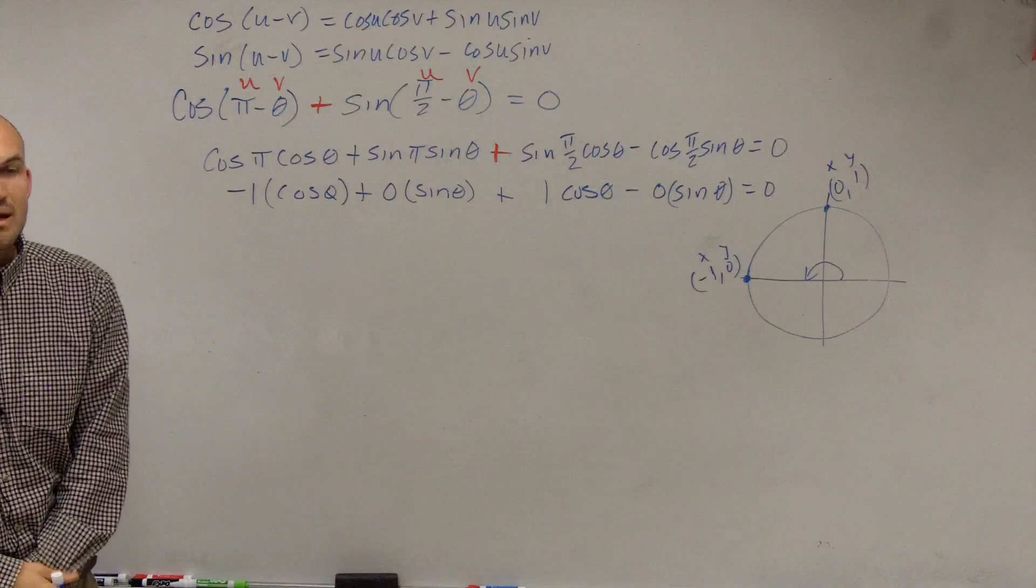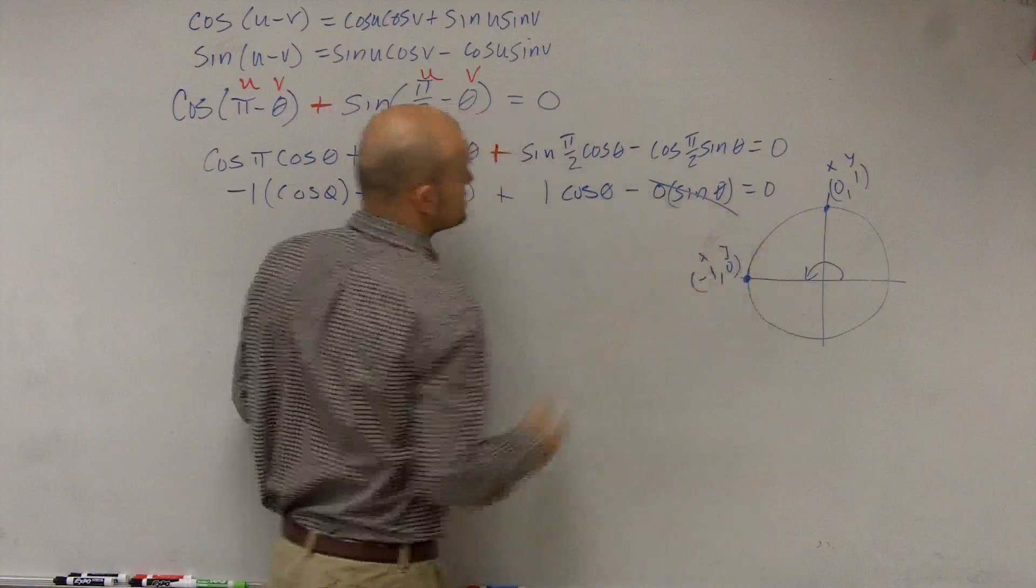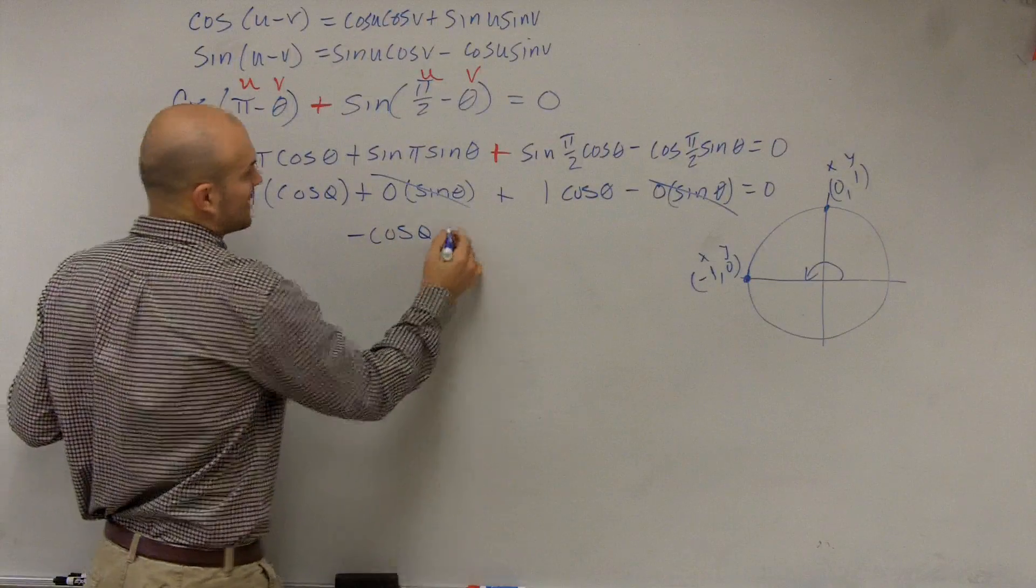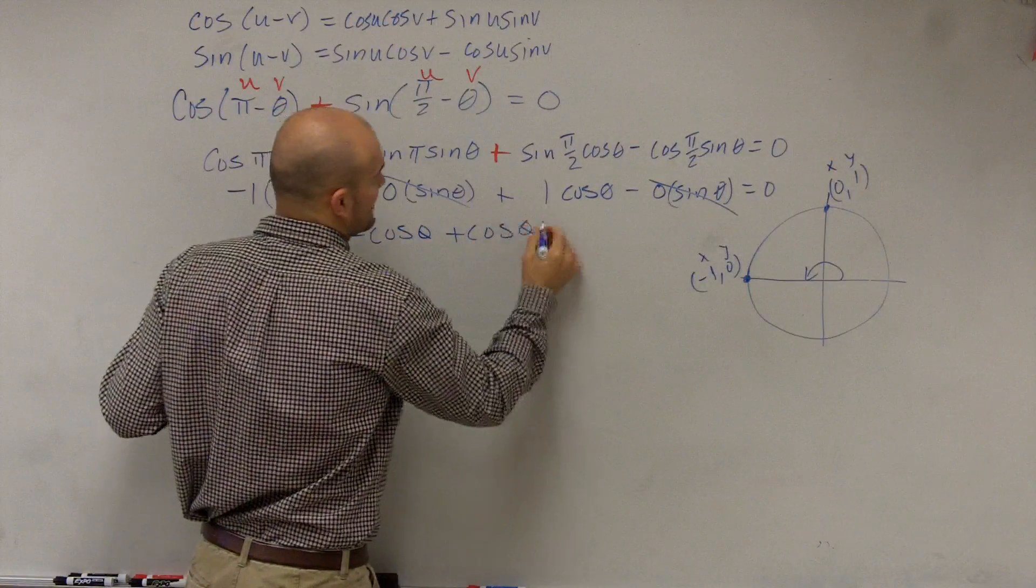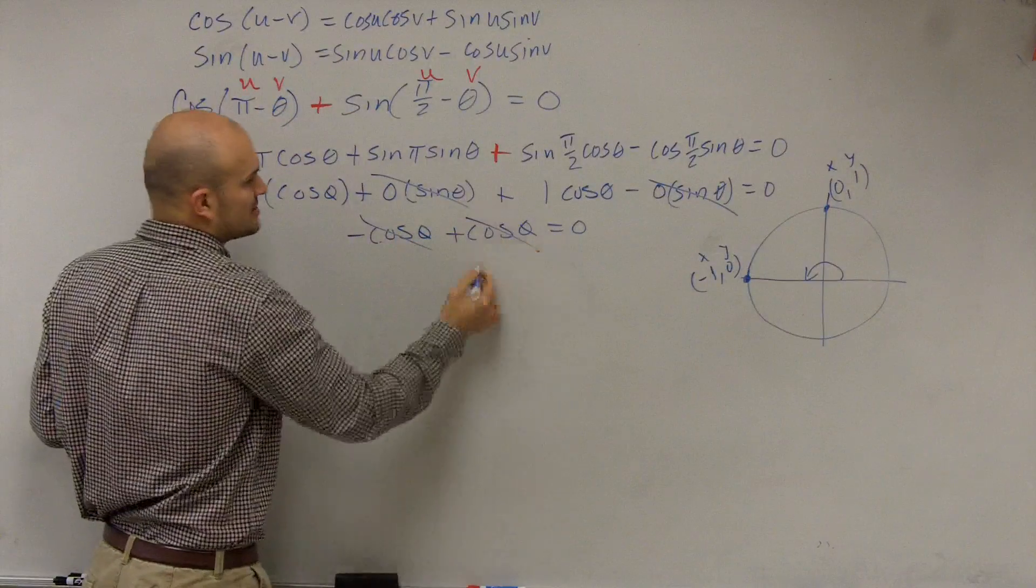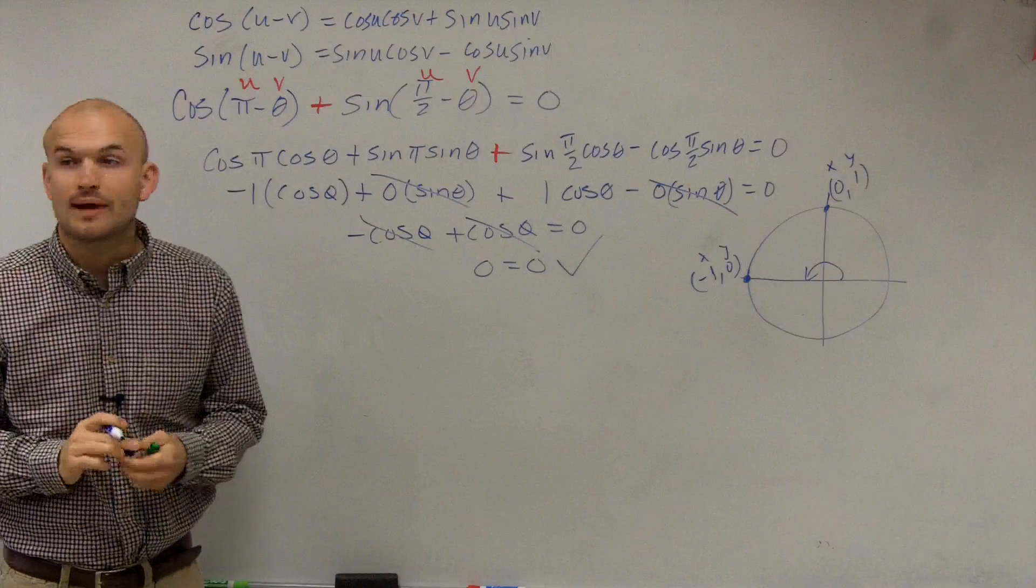Does anybody follow me so far? Well, obviously, anything times 0 is going to be 0. So we cancel those out. Therefore, we're left with negative cosine of theta, plus cosine of theta equals 0. Well, obviously, these are going to add up to 0. And we have 0 equals 0 verified.